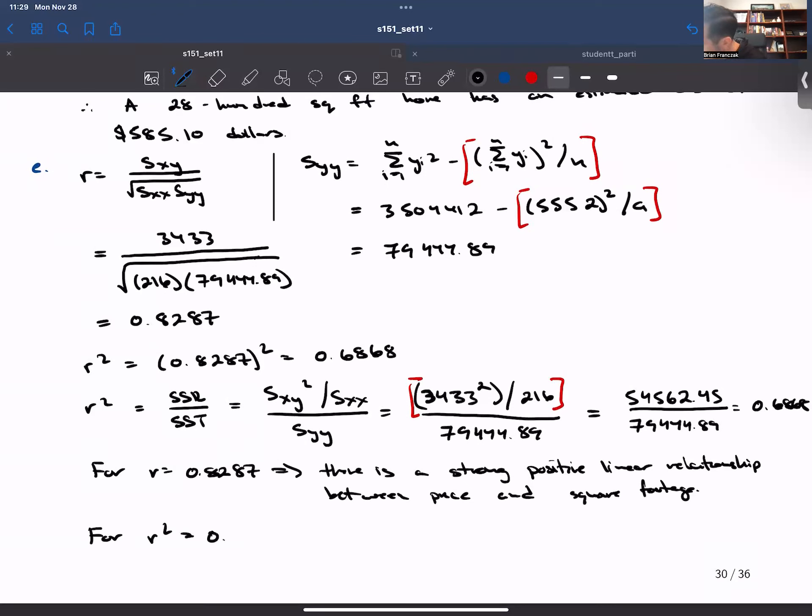So for r squared 0.6868 we would say the fitted regression line explains 68.68 percent of the variation in the response variable.